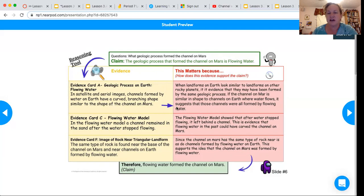This matters because when landforms on Earth look similar to landforms on rocky planets, it is evidence that they may have been formed by the same geologic process. If the channel on Mars is similar in shape to channels on Earth where water flows, it suggests that those channels were all formed by flowing water.